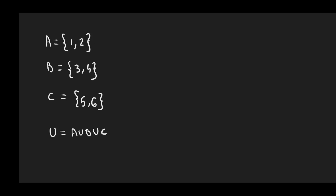So A union B union C, which in this case turns out to be {1, 2, 3, 4, 5, and 6}.